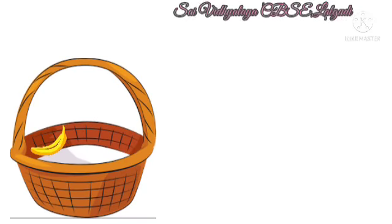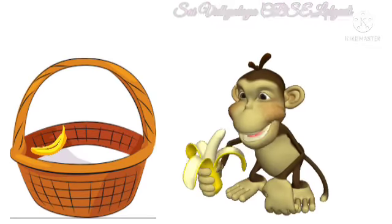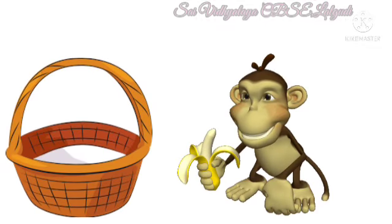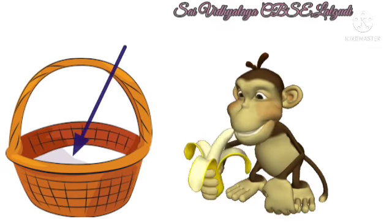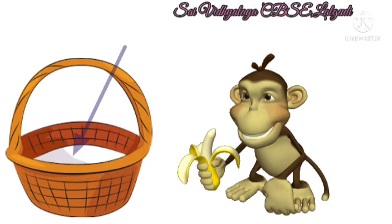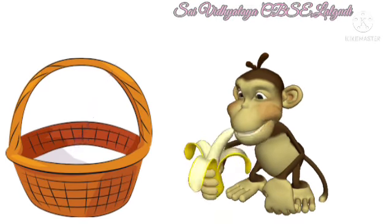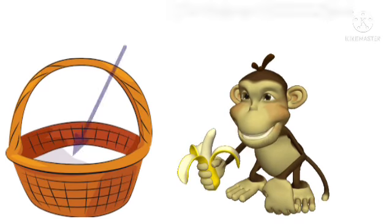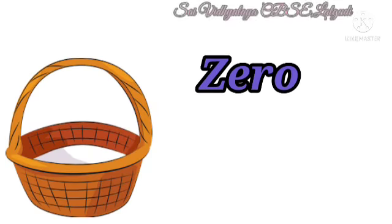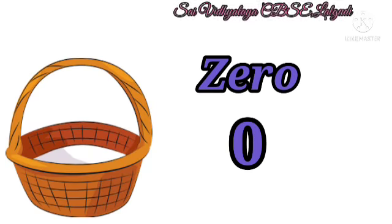Now, 1 banana kept in the basket. If monkey pick and eat 1, how many will be left in the basket? There are no bananas in the basket. Yes. There are no bananas. So, it is said to be 0. This number is called 0.